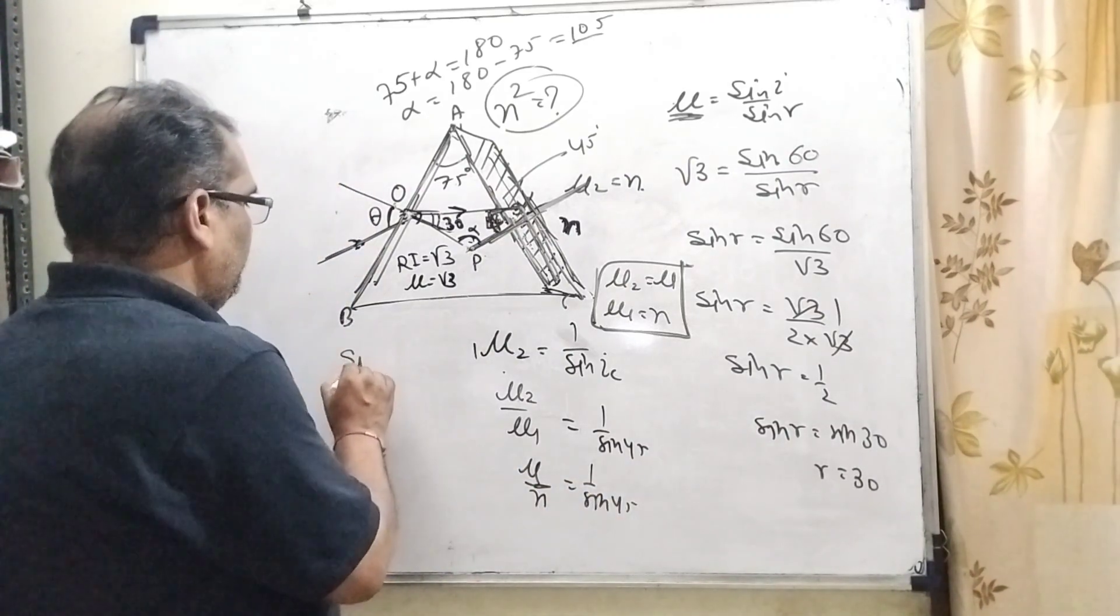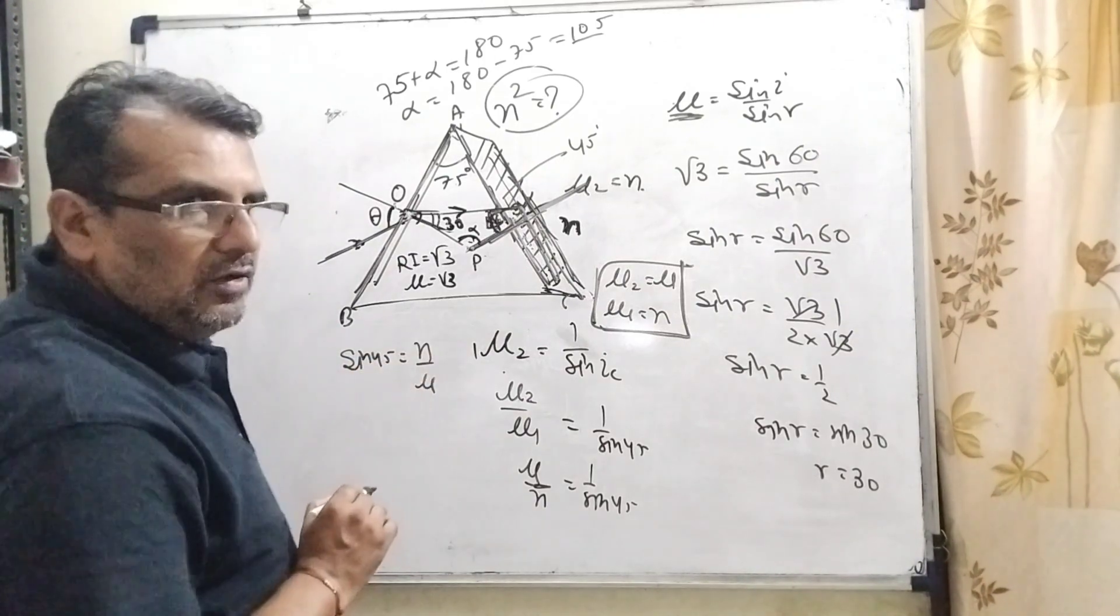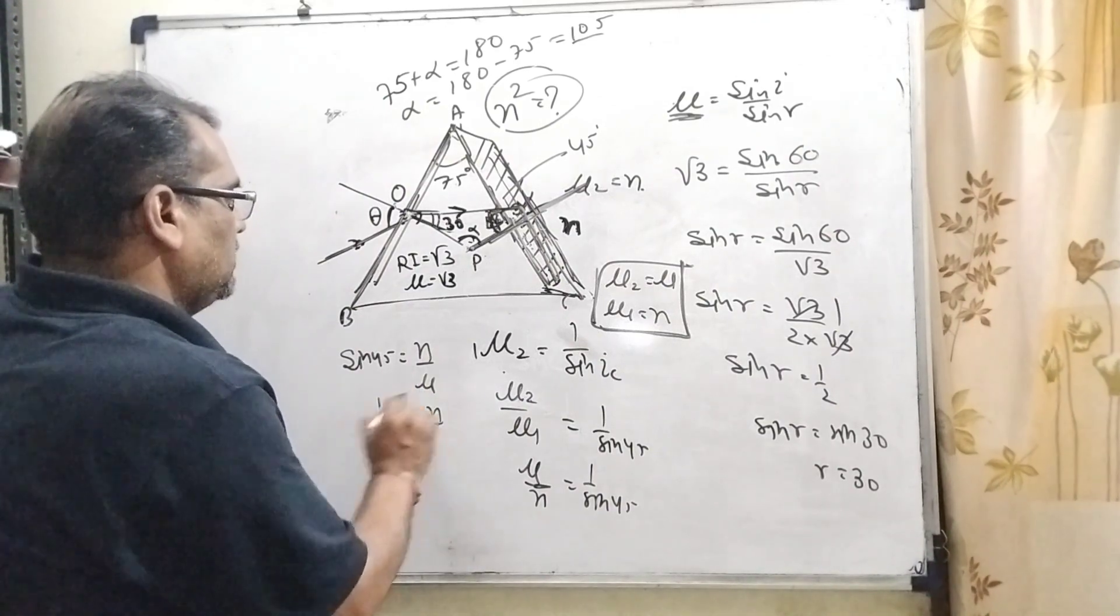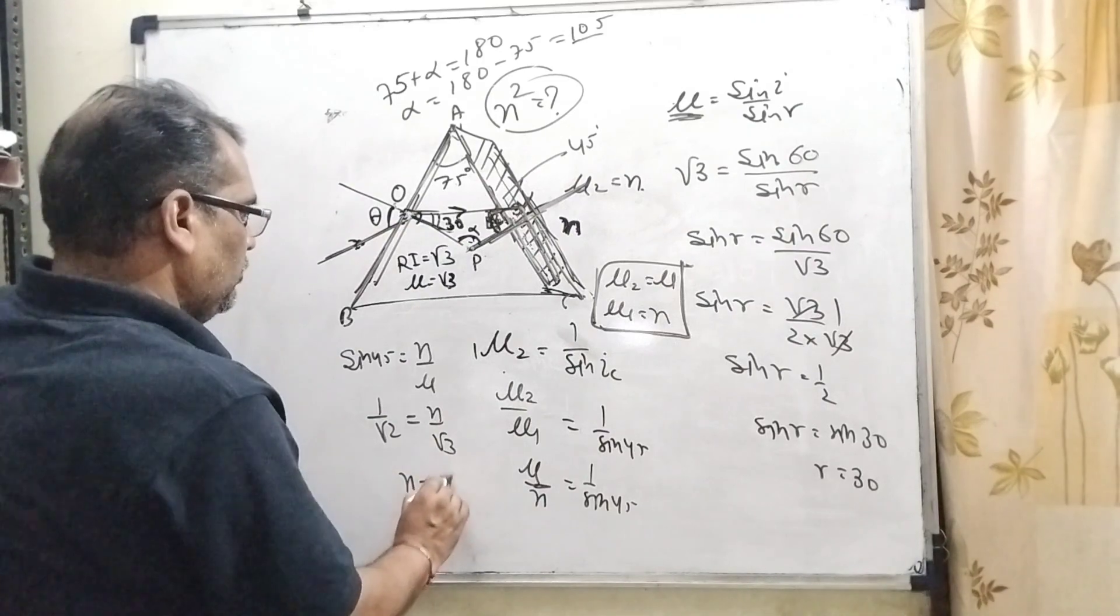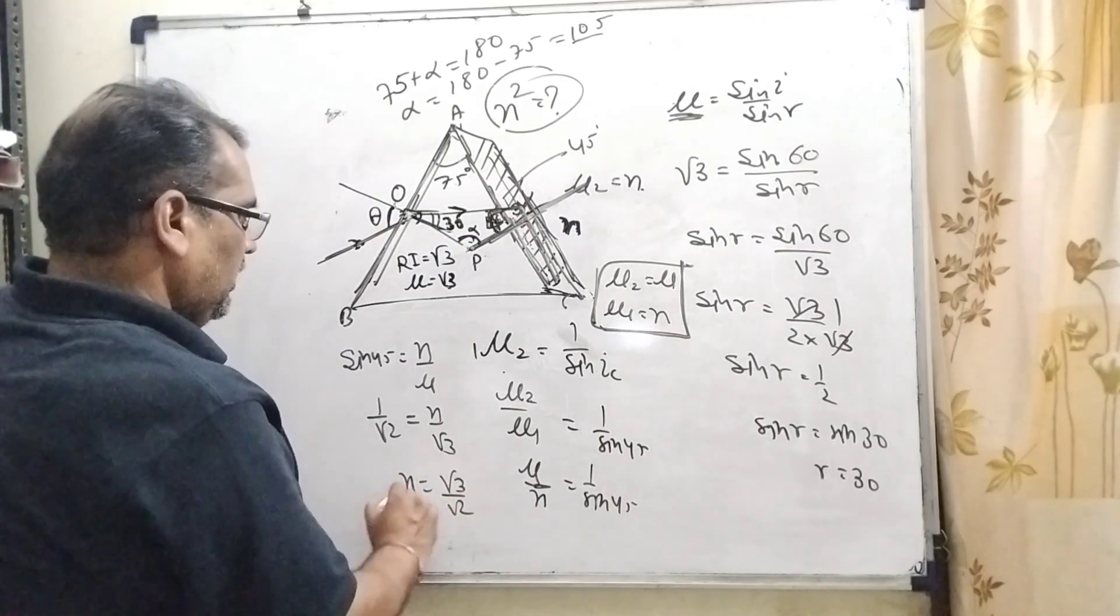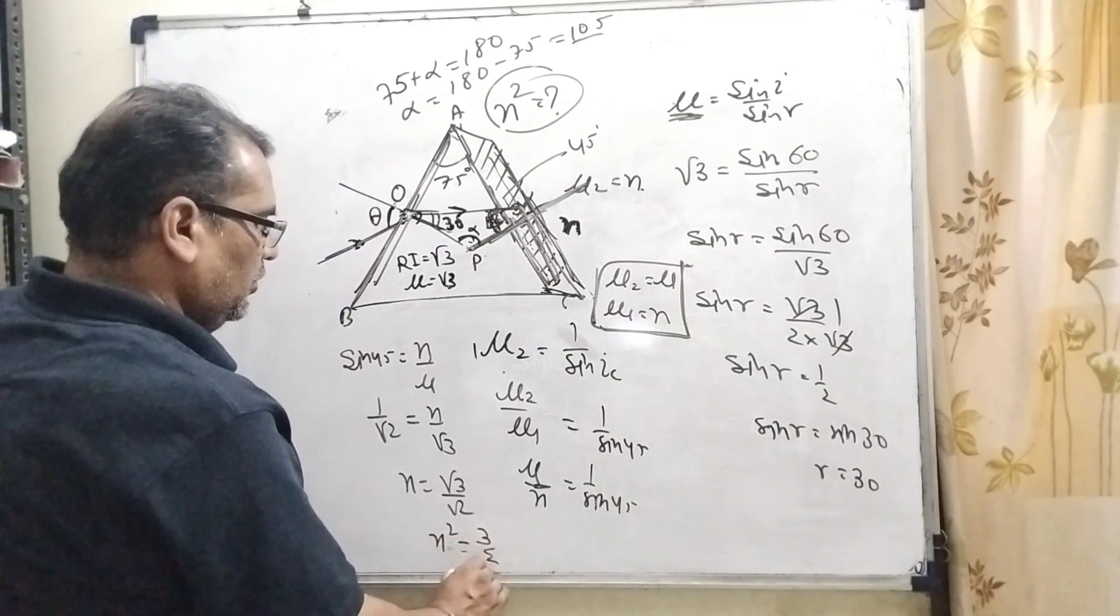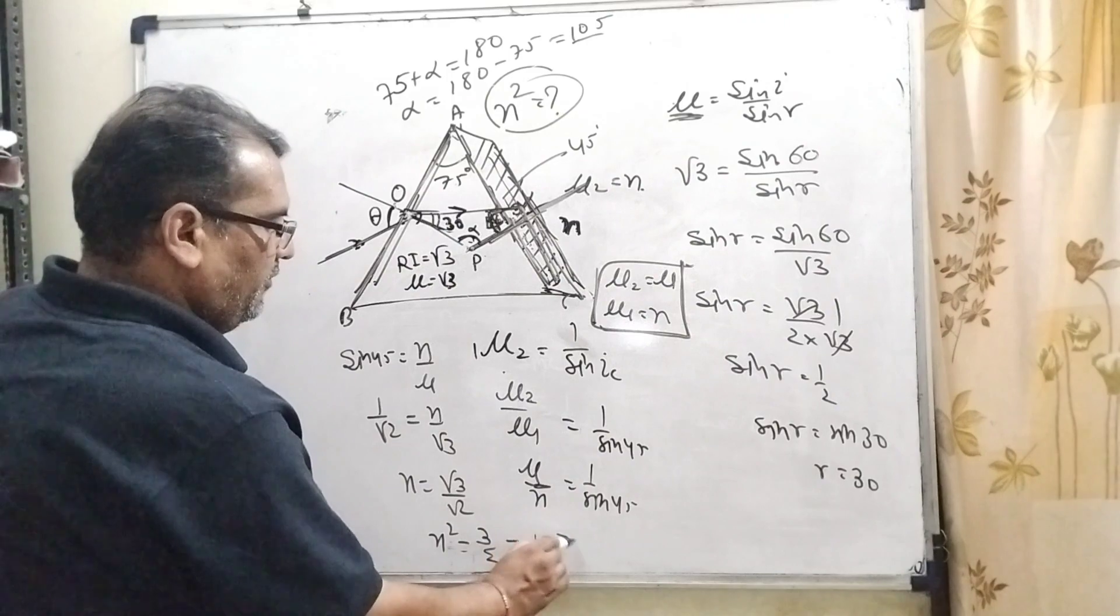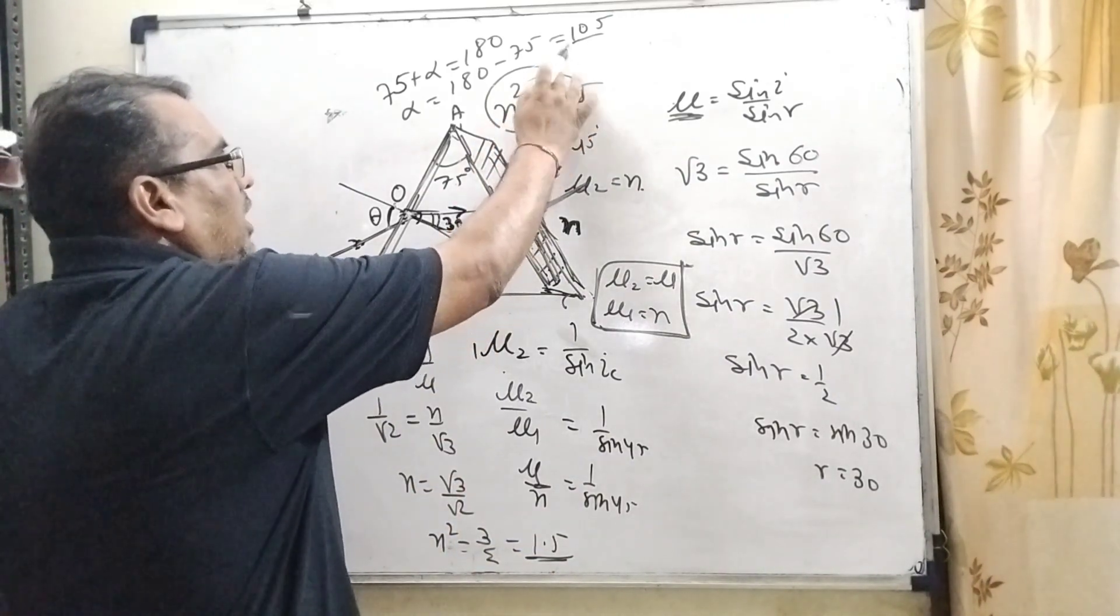Then sin 45 equals n by mu. Now what is the value of sin 45? 1 by root 2. And what is the value of mu? That is given root 3. Then n equals root 3 by root 2. Now squaring both sides, n square equals 3 by 2. What is the value of 3 by 2? 1.5. So here n square is 1.5.